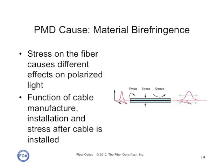Material birefringence is caused by stress in the fiber. The stress can be localized, and in the case of aerial fiber, change over time. Data has shown that stress-caused PMD can even be correlated with things like wind conditions affecting aerial fiber. Like waveguide birefringence, it can vary over time as stress in the cable plant changes.